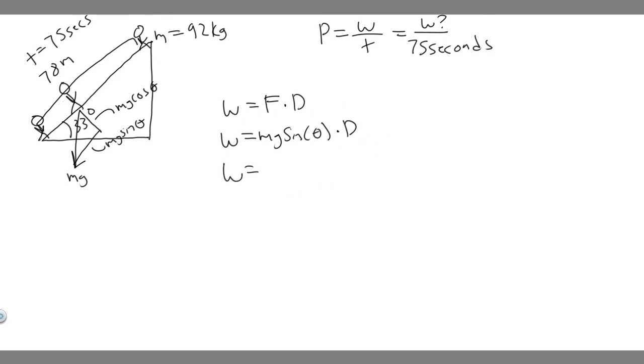So work equals mg times the sine times the distance. So the mass, which is 92 kilograms, times gravity, which is 9.8, times the sine. And then theta in this case is just the angle of the incline. So 33 degrees. And then multiply that by the distance. So the distance they're traveling is 78 meters. So 92 times 9.8 times the sine of 33 times 78. So if you go ahead and do this...